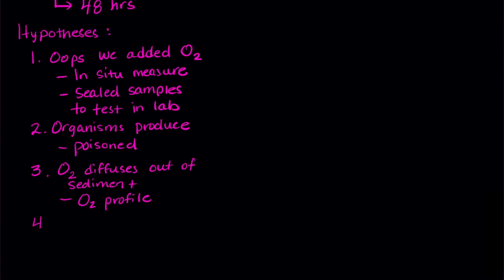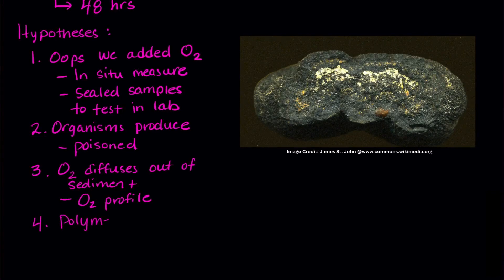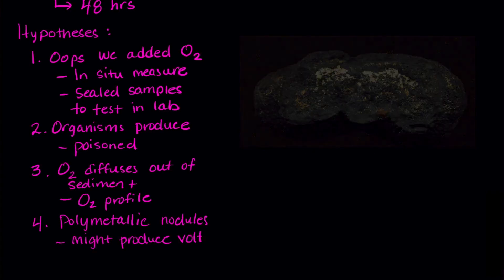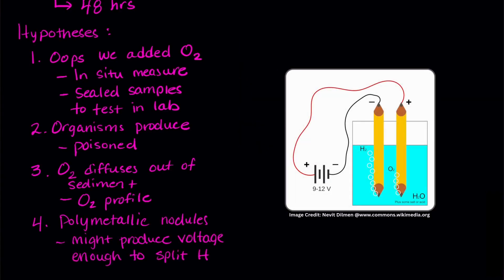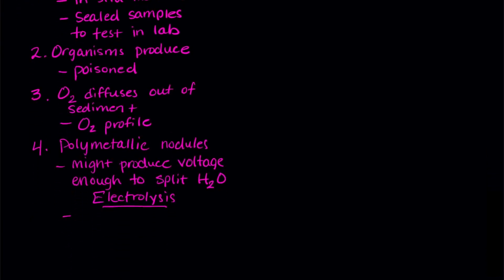And the fourth hypothesis. The polymetallic nodules were producing the oxygen. They might be able to produce enough voltage to break apart water into hydrogen and oxygen. This process is called electrolysis. The researchers measured the surface area of the nodules in their chambers, and they measured the voltage at lots of sites on the surface of the nodules.